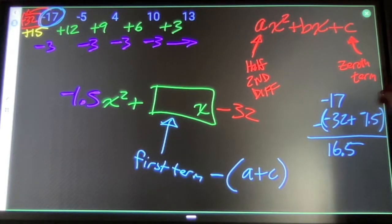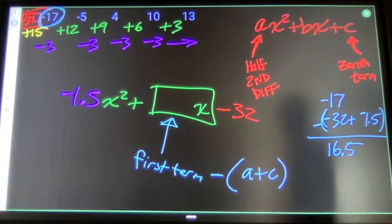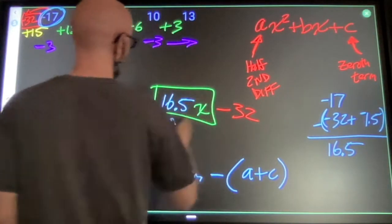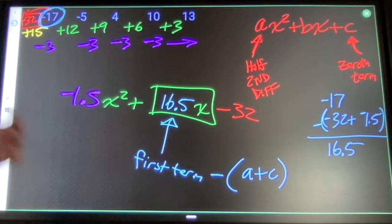You can use a calculator to do that. Just make sure you put all the symbols in that you're supposed to put in. 16.5 goes right here. So if I'm not confident that it works, I can easily check this.